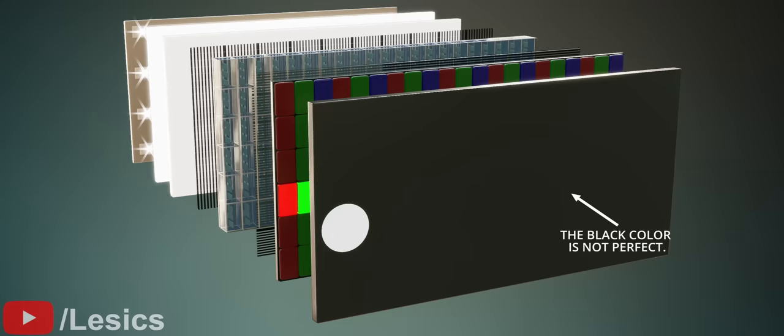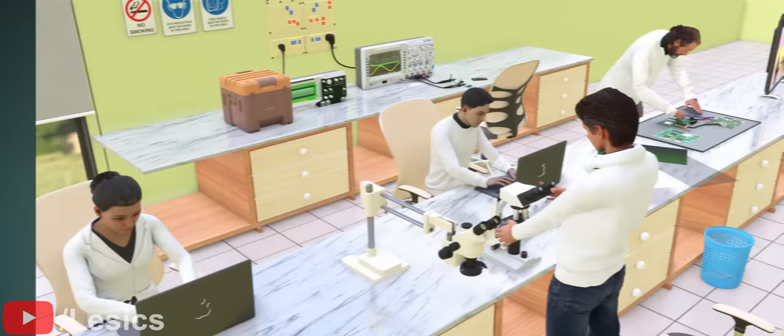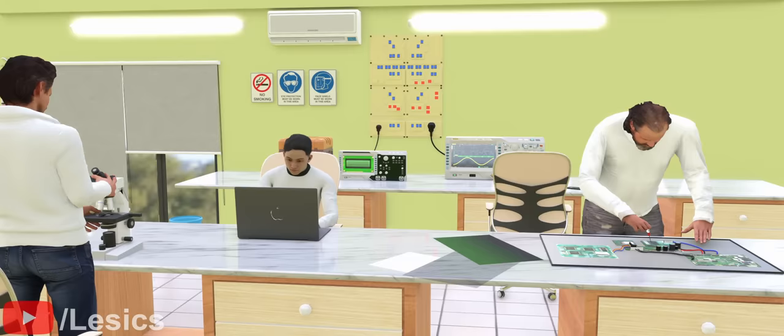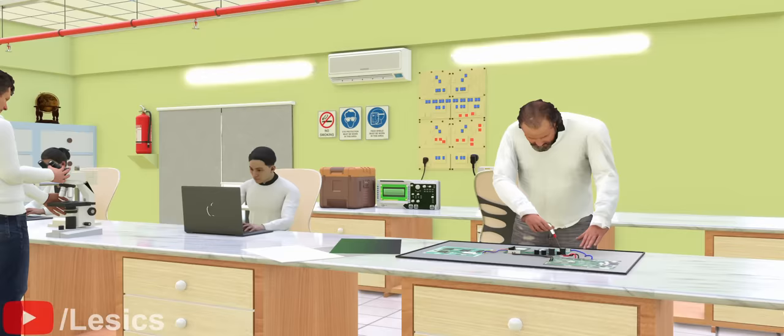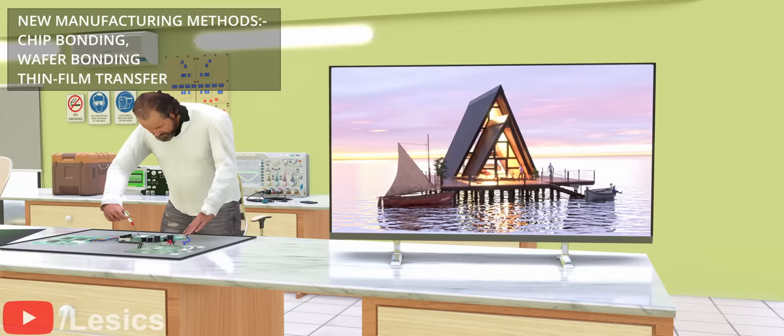As we have seen at the beginning, the manufacturing of small LEDs is difficult, but not impossible. Scientists are trying to overcome those problems by developing new manufacturing methods. When the LED display is manufactured with minute LEDs, it's called a micro-LED. The micro-LED display technology will be superior to OLED technology.